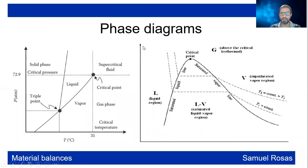Here you have a pressure-volume diagram, a PV diagram, where you have the liquid region, the vapor region, and above the critical temperature you have the gas region. Here is the critical point. These lines are constant temperature lines, and you have the liquid-vapor region, which is the saturation region. You have the saturated liquid line here — it is when liquid starts to change its phase — and a situation where liquid and vapor coexist until the last drop of liquid becomes a vapor.